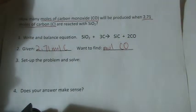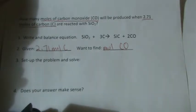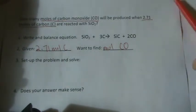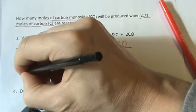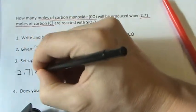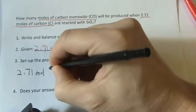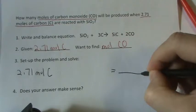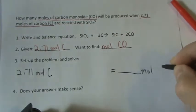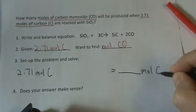So we know what we have and what we want. Let's solve the problem by setting it up. We'll write what we have: 2.71 moles of carbon. And way over here, let's write what we want. We're looking for moles of carbon monoxide.